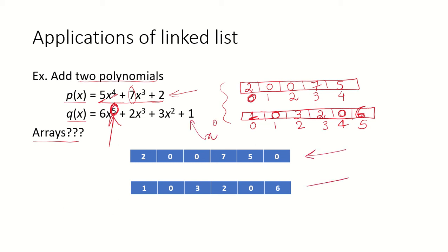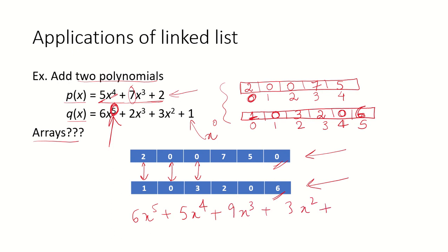When we represent these two polynomials using an array of size 6, it is easy to run a loop and add the respective indices, giving the final answer as 6x to the power of 5, plus 5x to the power of 4, plus 9x cubed, plus 3x squared, plus 3. This would be our final result when using arrays to represent and add these polynomials.